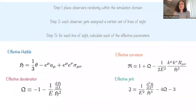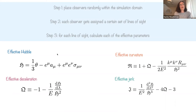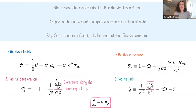To calculate the effective parameters, we place observers randomly within the simulation domain, and each observer is assigned a set of lines of sight, giving a unique value for each observer and each independent line of sight. For each, we calculate the effective Hubble parameter, and the other parameters are built from derivatives of the effective Hubble parameter along the incoming null ray. The effective curvature parameter also requires the Ricci focusing term — the contraction of the photon 4-momentum with the Ricci curvature of spacetime at the observer position.